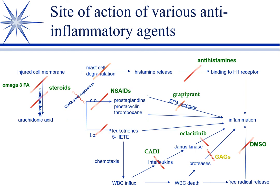One of the first things in early inflammation is we get mast cell degranulation. Mast cells have histamine and heparin. We can see some heparin effects — a little more bleeding, especially with mast cell tumors — but mostly we see histamine release. That histamine is going to bind to your H1 receptor, your histamine-1 receptor. And antihistamines block that, so whereas histamine would normally bind and cause inflammation, we can block it with an antihistamine.